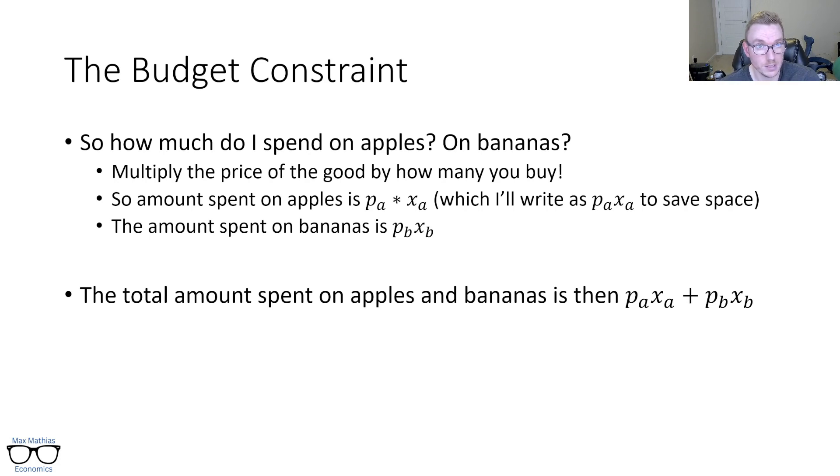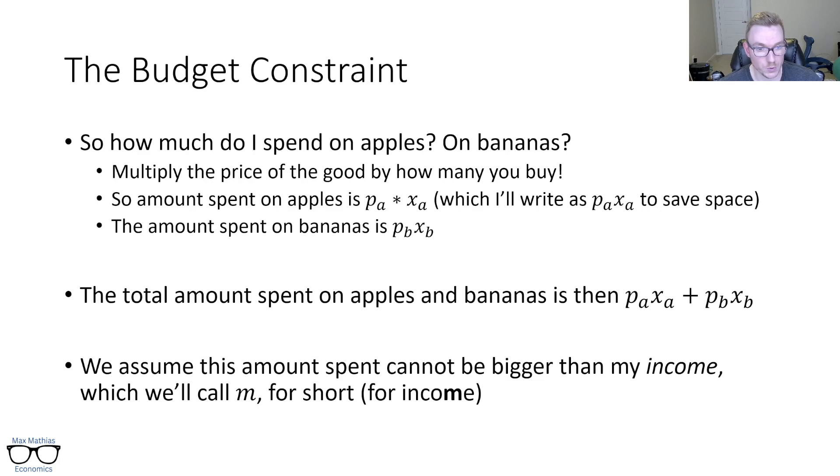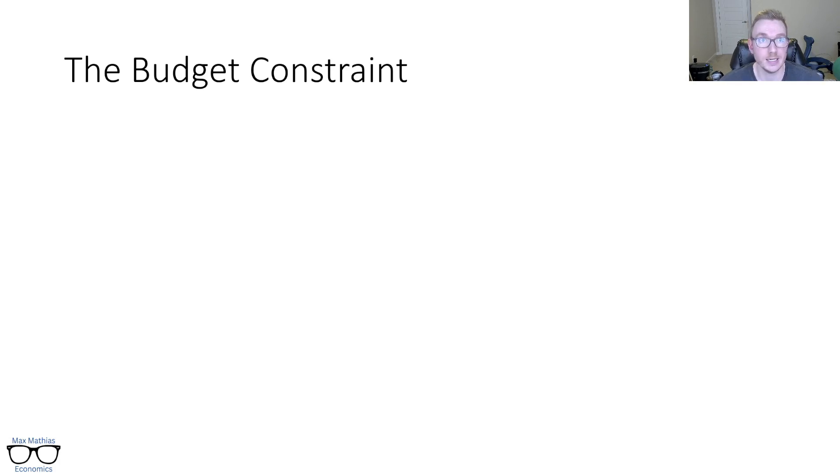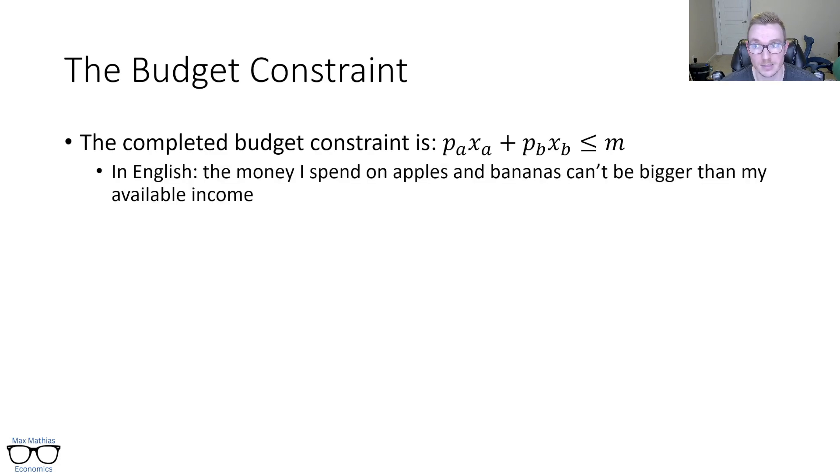The total amount then spent on both is how much you spend on apples, that P_A X_A component, plus how much you spend on bananas P_B times X_B. What we also assume then here is that you are limited by the amount of money you have. So what you are spending on apples and bananas together can't be bigger than my income, which we call M for short. And that M just comes from the M in income. So to kind of put that all together into what we would call the budget constraint is that P_A times X_A plus P_B times X_B must be less than or equal to M, my income. All this means in English is that the money I spend on apples and bananas, it can't be bigger than my available income. Otherwise, if you were to go to the register and try and buy it, you wouldn't be able to afford it. You'd have to put something back.